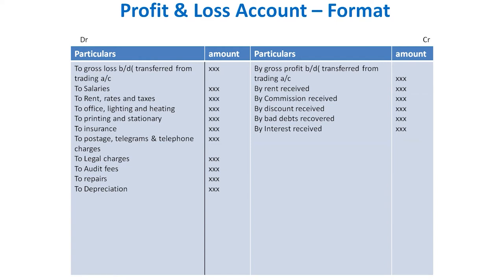Next is insurance — payable on any plant and machinery or building — also an indirect expense. Then legal charges, audit fees, and repairs of plant and machinery or building. Next is depreciation — the reduction in the value of an asset. For example, plant and machinery purchased in 2015 will have reduced in value after 5 years, and that reduced value is a loss to the business.